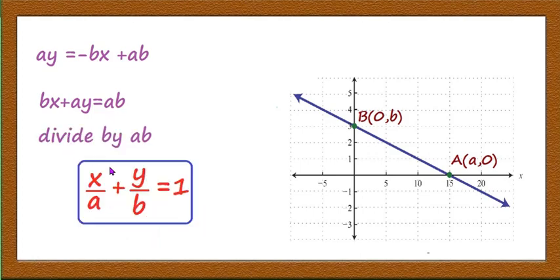Dividing by ab, we have x/a + y/b = 1, and this is the equation of the line whose x-intercept is a and y-intercept is b. This is the intercept form.